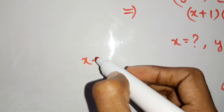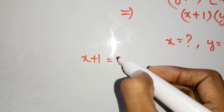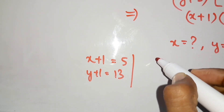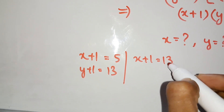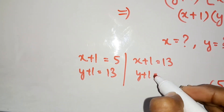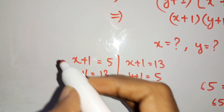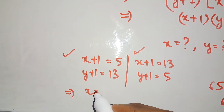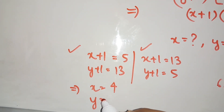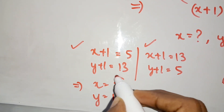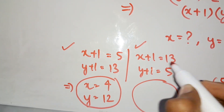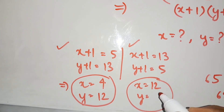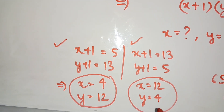We have two valid cases. Either x plus 1 equals 5 and y plus 1 equals 13, or x plus 1 equals 13 and y plus 1 equals 5. From the first case: x equals 4 and y equals 12. From the second case: x equals 12 and y equals 4.